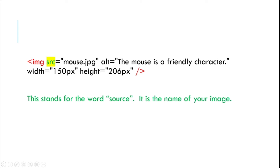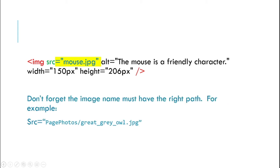The next part stands for source, so it's the name of your image — this attribute. We're using as an example a graphic called mouse.jpg. On our page you can see we used page-photos/great_gray_owl.jpg because we put our graphic into a folder, so you just have to make sure you have the right path. If it doesn't show up, check and see where your image is.